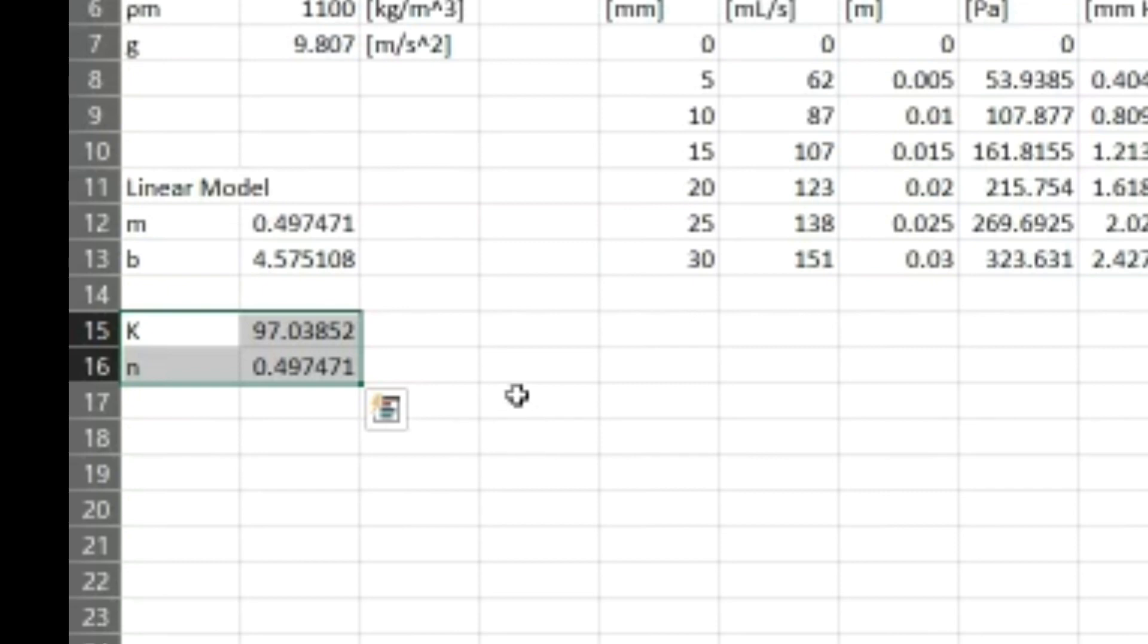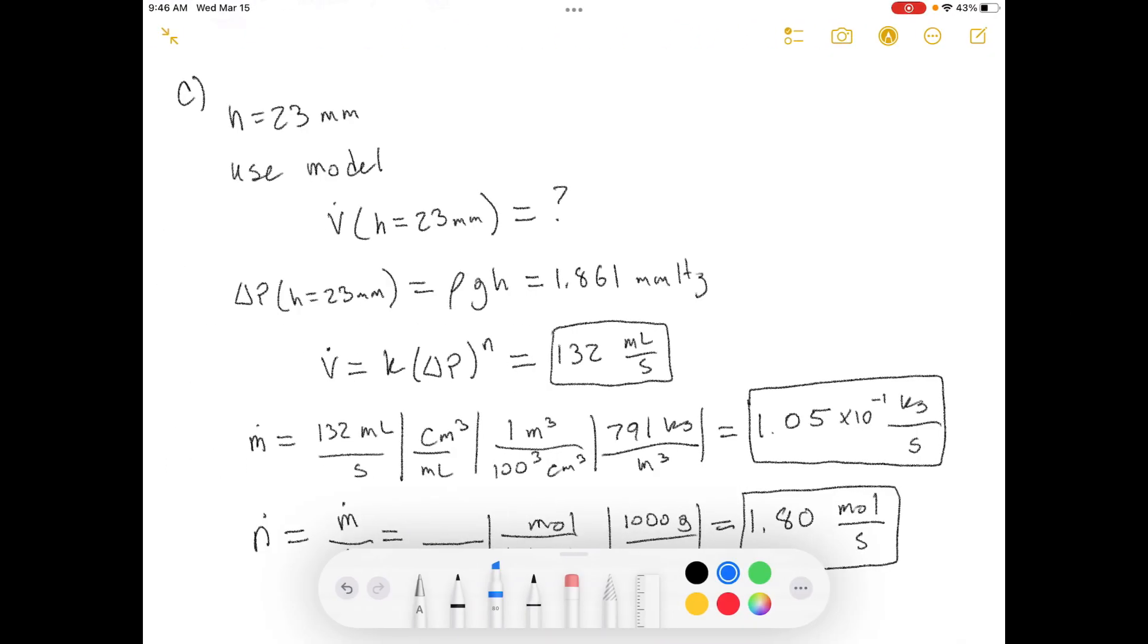Let's move on to part C. Suppose the orifice meter is mounted in a process line containing acetone and a reading H equals 23 millimeters is obtained. Determine the volumetric, mass, and molar flow rates of acetone in the line. So let's move back over to our writing. So we've got H is equal to 23 millimeters. Well, we can just go through, convert that into meters. So this equals 0.023 meters. And then we can convert that into a certain delta P using our function that we used before. And then we, given a certain delta P, we can calculate what V is based on our model that we just defined. So we use our model. We say, what is delta V given a certain H?